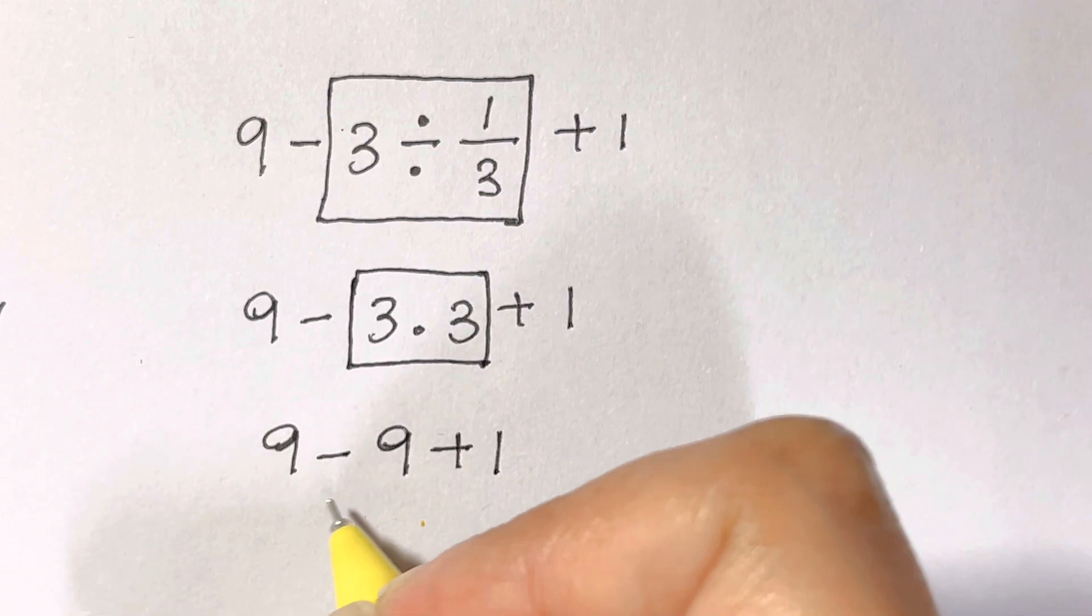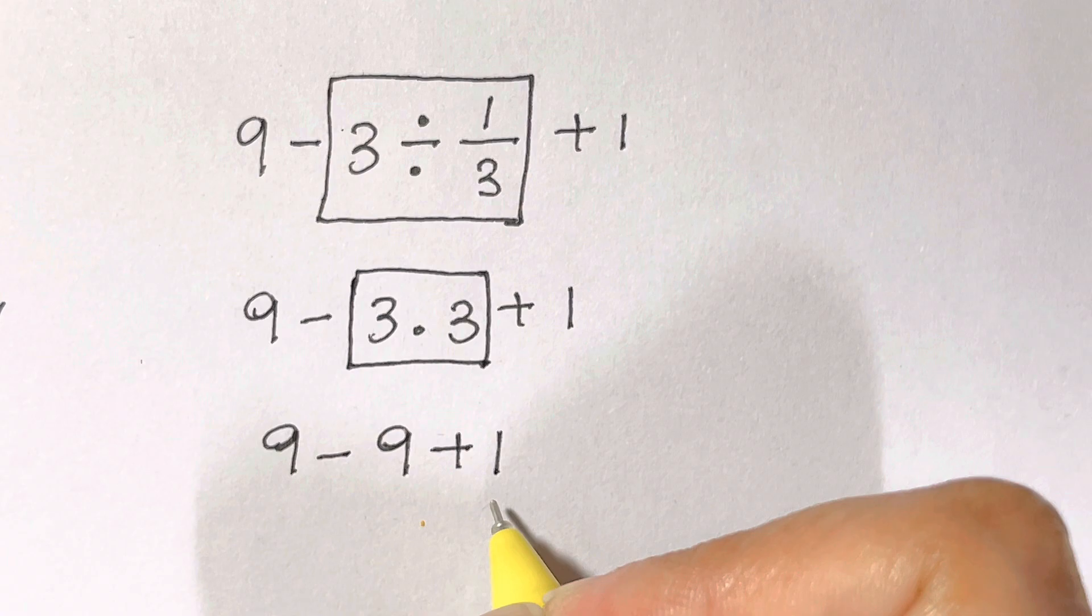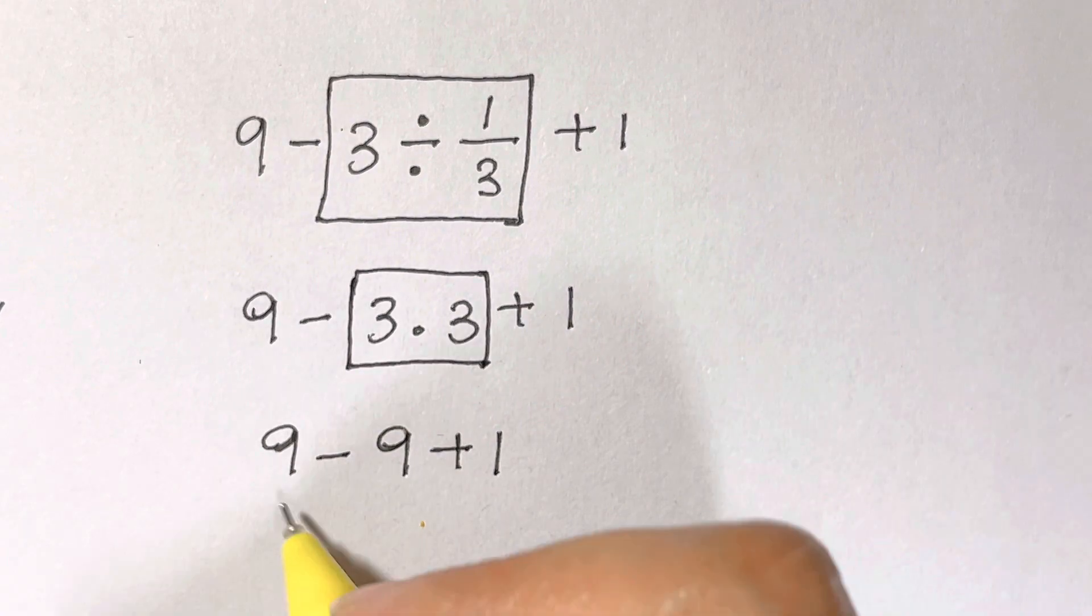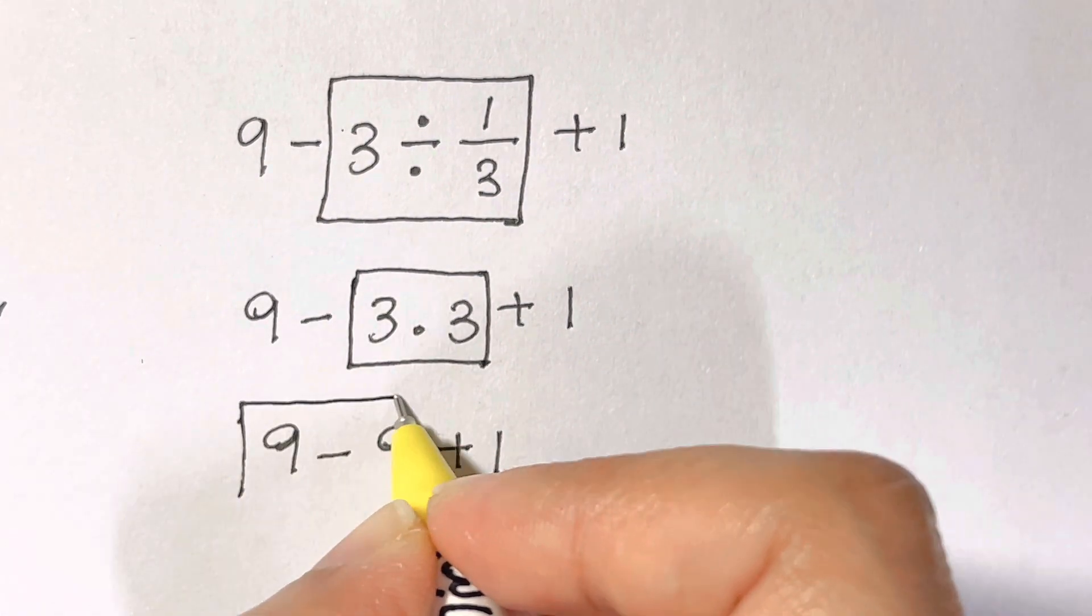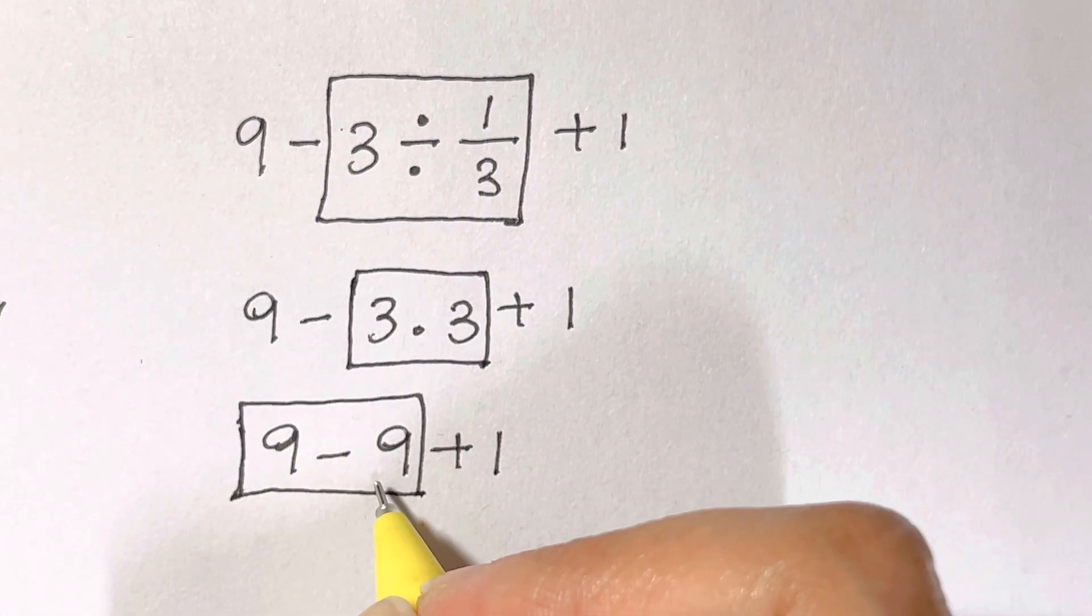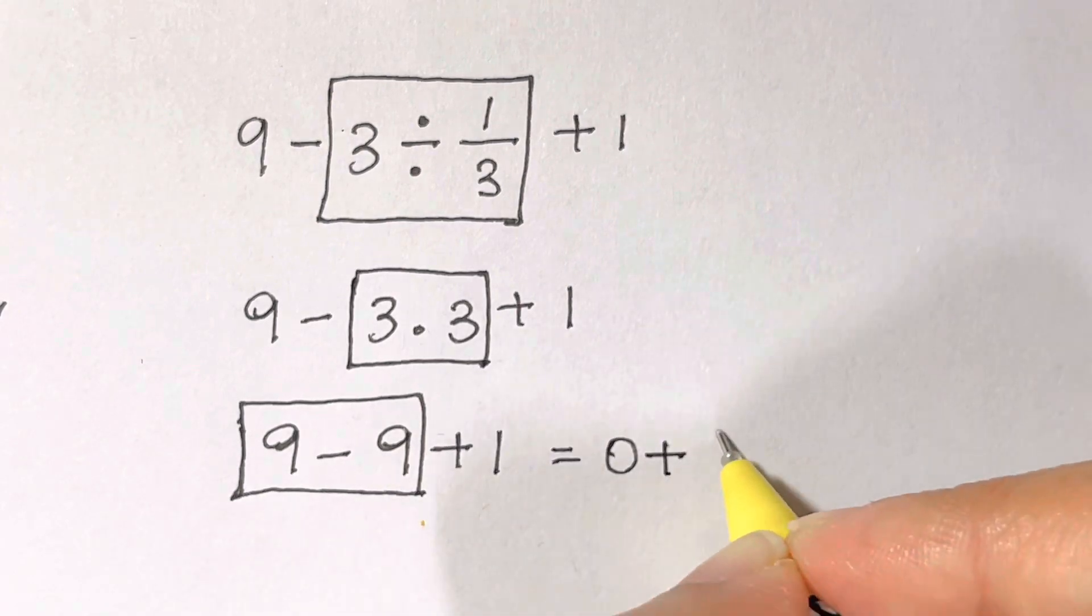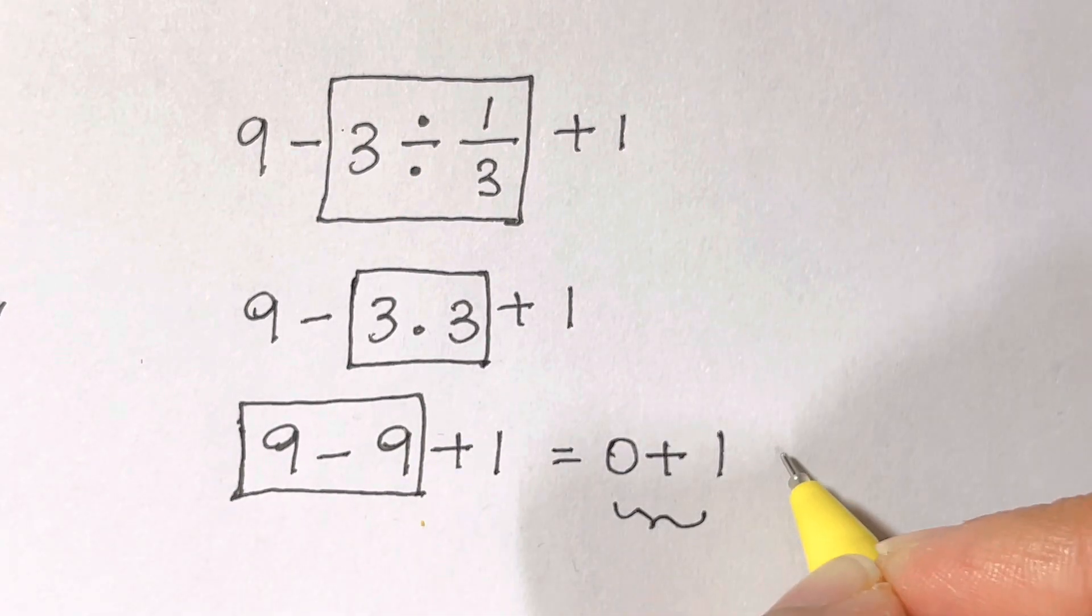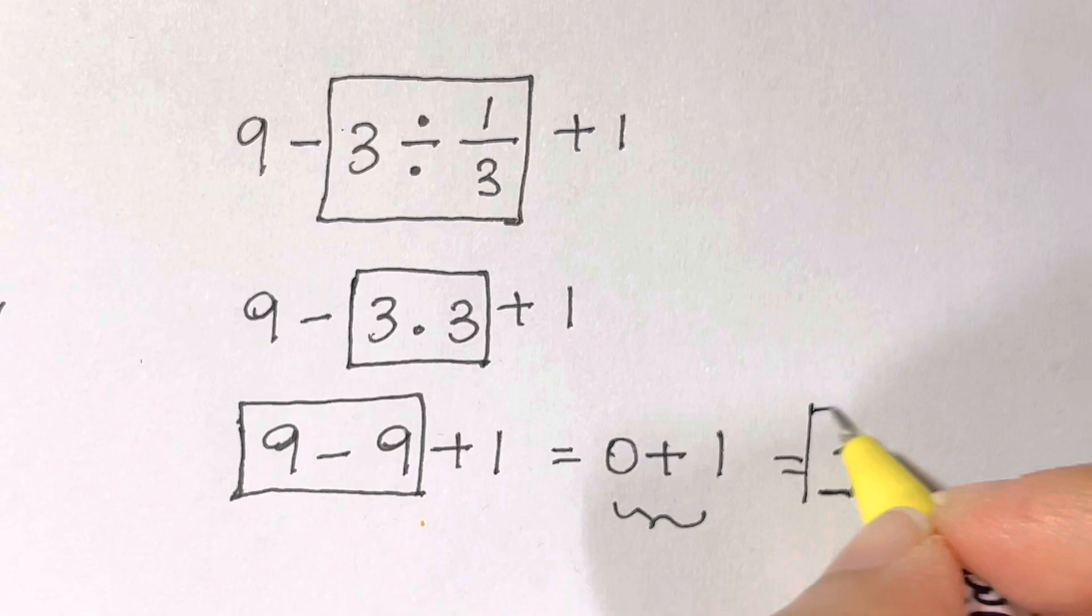And now we have an expression with only addition and subtraction. How do we evaluate this expression? If you have operators with same precedence—addition and subtraction—you want to evaluate the expression from left to right. So we first evaluate 9 - 9, that gives us 0. Then you evaluate 0 + 1, which gives us the correct answer of 1.